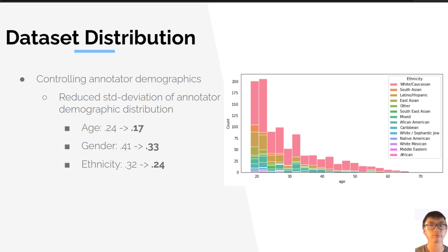As it is commonly known, crowdsourced demographics are often quite skewed, as shown on the figure to the right, which shows a majority of white annotators. In order to correct this skew and provide good analysis of the data, we must control certain demographics. We achieved this by gathering data from underrepresented populations in crowdsourcing demographics. Through this process, we were able to reduce the standard deviation of our annotator demographic distribution. For example, age went from 0.24 to 0.17, gender went from 0.41 to 0.33, and ethnicity went from 0.32 to 0.24.